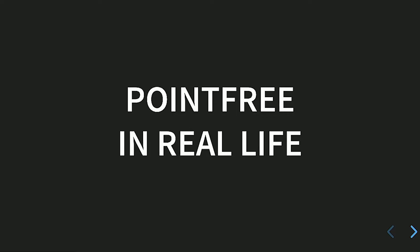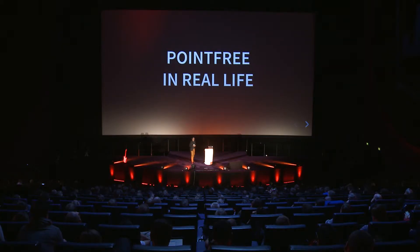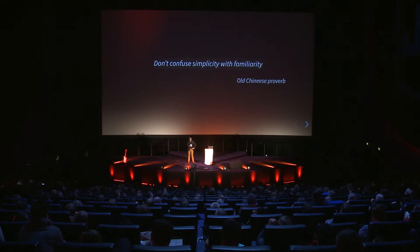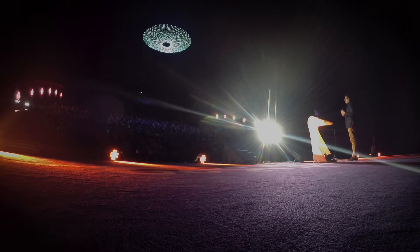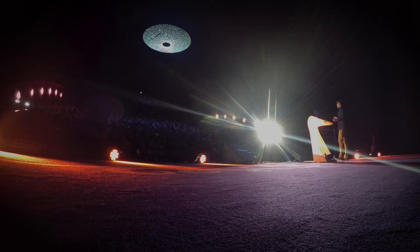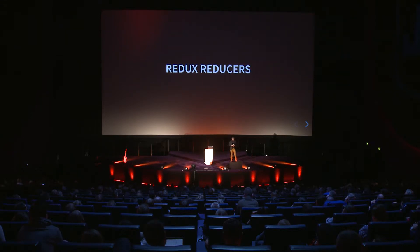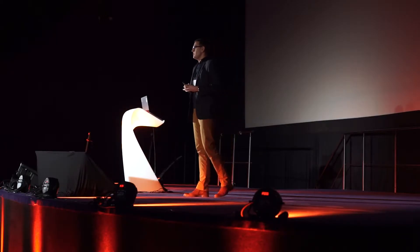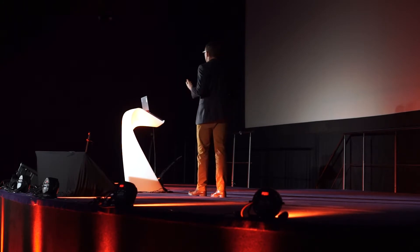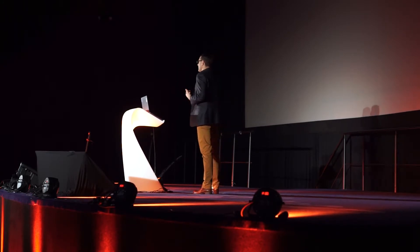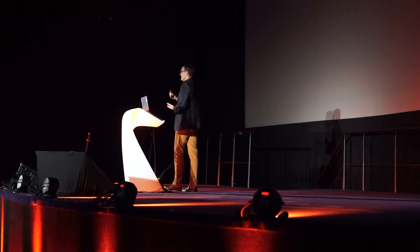Now we know all the tools we need, so we can talk about real-world examples. Before I start, keep in mind that the code you're going to see might not feel familiar, but that doesn't mean it's more complex — just give it a chance. Let's start with Redux reducers. A reducer is simply a function that takes an object representing the state and an action, and returns the result of applying that action on the state.